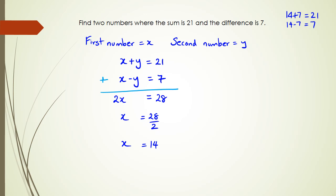Now once we have x equals 14, we go back and substitute. We got x plus y equals 21, so 14 plus y equals 21, y is equal to 21 minus 14. And there are my two numbers: 14 and 7.